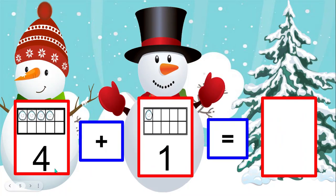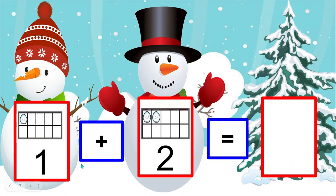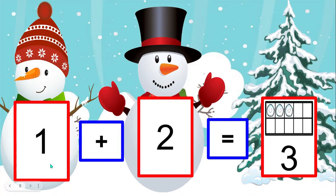Four snowballs plus one snowball equals how many snowballs? Four plus one equals five snowballs. One snowball plus two snowballs equals how many snowballs? One plus two equals three snowballs.